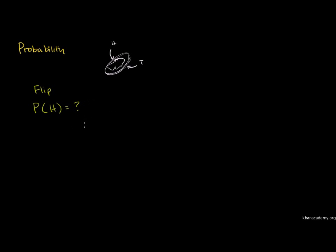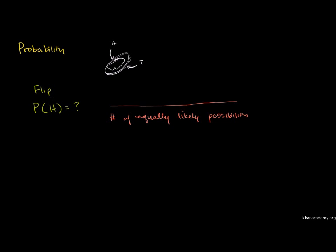The answer is: how many different probabilities are there for that particular coin? I am going to explain how many equally likely possible events are possible, and how many favorable events are possible — the number of possibilities that meet the condition. How many times can head apply? What are the total conditions?